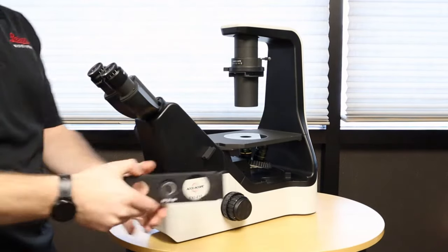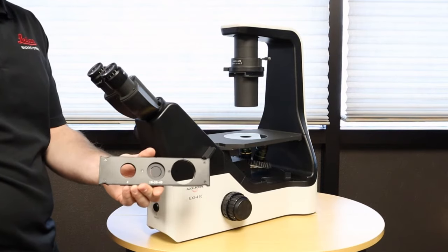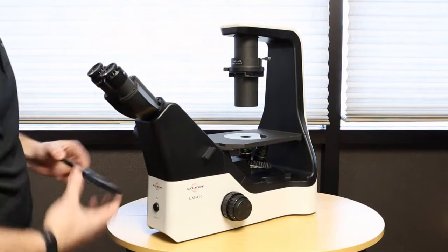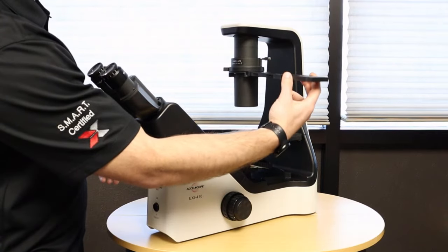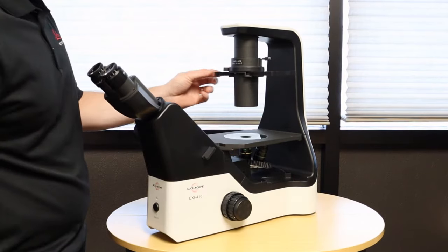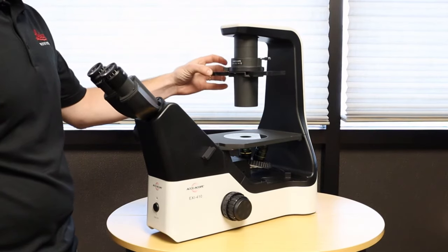And the last component is our phase slider. The phase slider is used to achieve phase contrast with the objectives and this simply gets inserted into the condenser slot. It can go in from either way, it doesn't matter. And there are click stops to help guide you across each position.